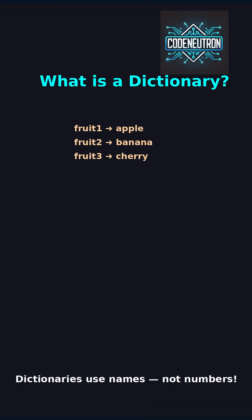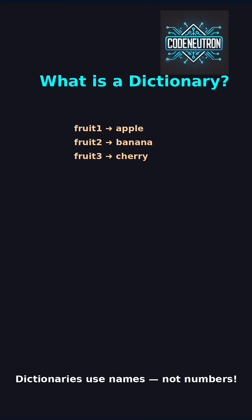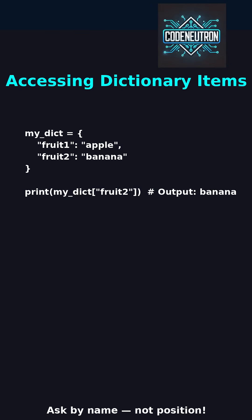Now picture a dictionary as a shelf of labeled jars. Each label is a key, and inside is your value. It's not about order, it's about names. Instead of numbers, you ask Python by name. Like fruit — Python opens the jar and hands you banana.